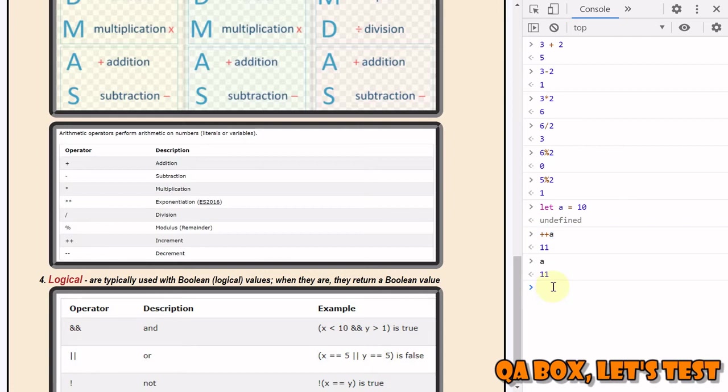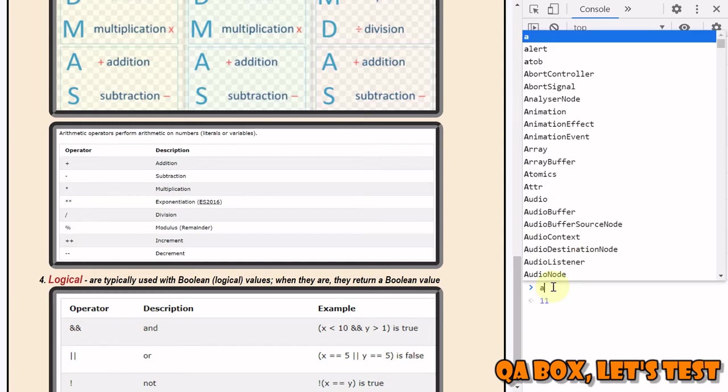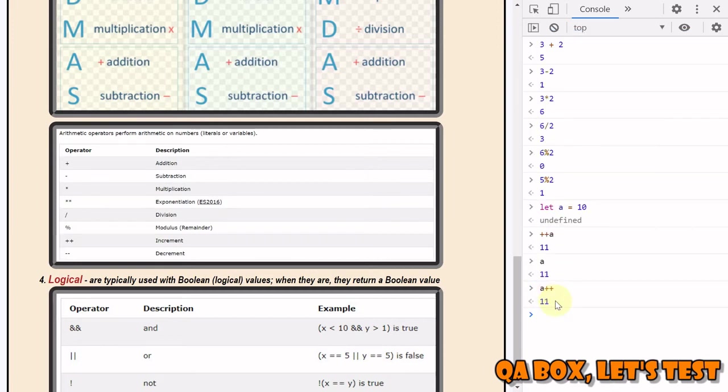Now the value of a is 11, and we say a++. This time you would see the difference - the value is 11. In the previous case this is post-increment. In the pre-increment the value was incremented in the same step, but in the post-increment first the value is assigned then it's incremented. So if you check now you get 12. That's the difference.